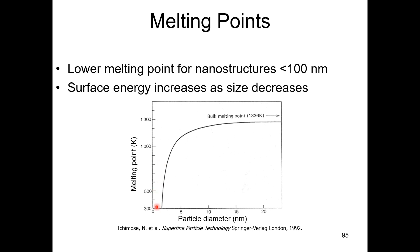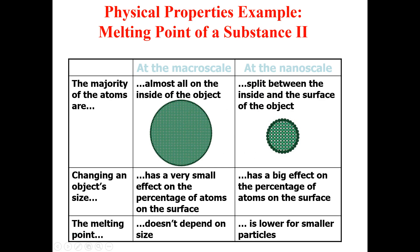Here we have a reference graph from a 1992 paper — quite an old paper, but it was basically the time when nanoscience was at a developing stage. You can see how the melting point is affected by reductions in the size of the material. The melting point is quite high when the dimensions are above 10 nanometers, but once the size is reduced below 10 nanometers, you can see how rapidly the melting point drops.